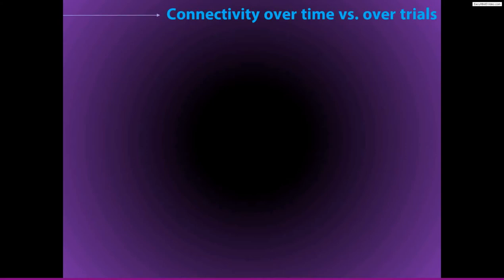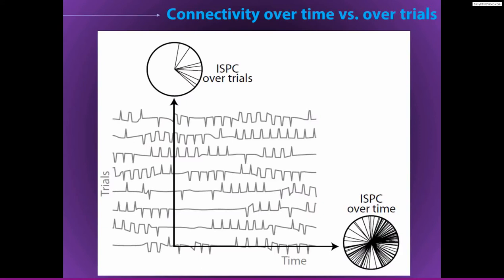Another thing to keep in mind is that most measures of connectivity can be computed either over time or over trials. Here I have a graph that illustrates this idea conceptually. Imagine each one of these lines corresponds to a trial — this is time, and each of these are trials, so here we have eight trials. We can compute connectivity within a single trial over time — this would be called connectivity over time. Or we can compute the connectivity estimate at a single time point over trials — this would be connectivity over trials.